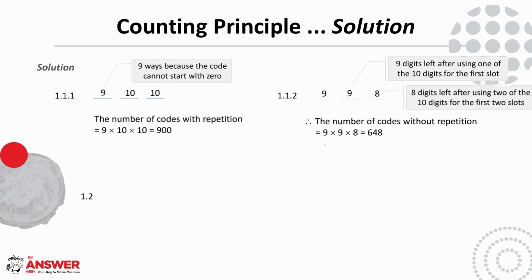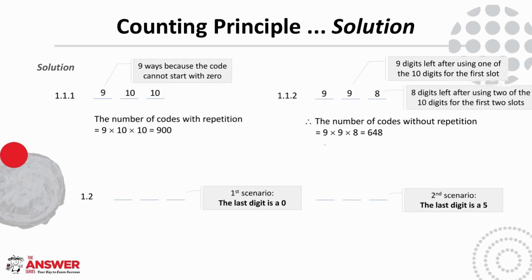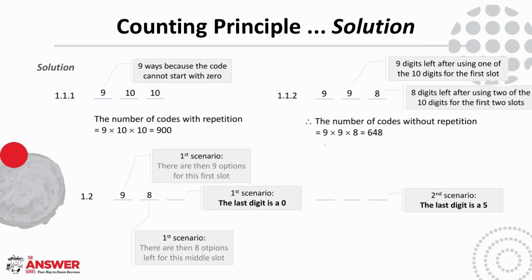For 1.2, for a code to be a multiple of 5, it either needs to end in a 0 or a 5. The first digit cannot be a 0. In the first scenario, where the last digit is 0, there are nine options for the first digit, eight for the second, and only one for the last. In the second scenario, where the last digit is 5, there are eight options for the first slot because it can't be a 5 or a 0, then eight for the second, and one for the last.